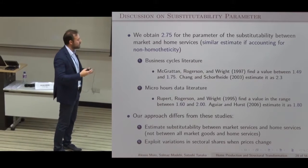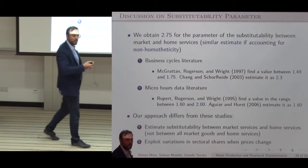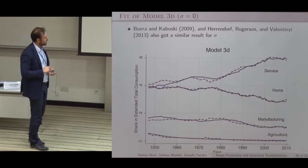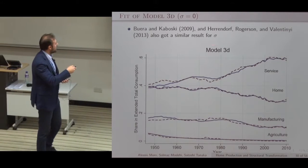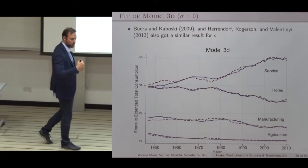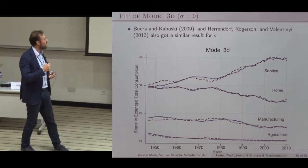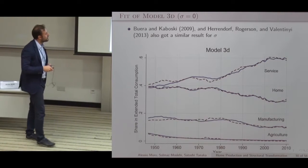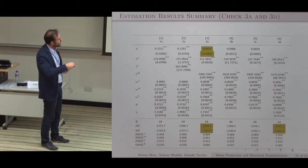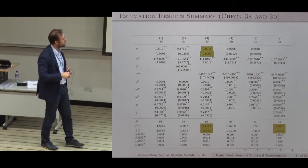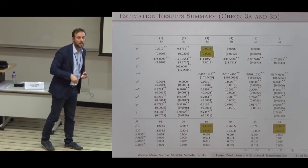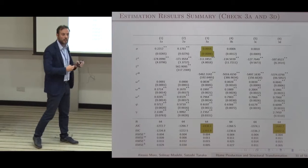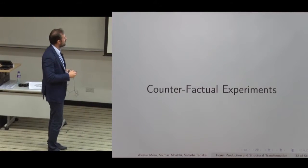Regarding sigma: previous studies estimating the standard model find it very close to zero. We find something similar and impose this restriction. Even adding the home production sector, this elasticity remains very similar to previous studies — very small. We present robustness by fixing gamma at the smallest and largest values found in the literature: with the smallest value the fit is poor, with the largest (2.3) it is quite good, consistent with our estimated value of approximately 2.75.